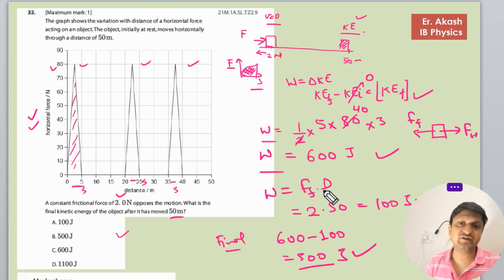Okay, so according to me, the answer would be 500, that is the B option. So now we will check the mark scheme.